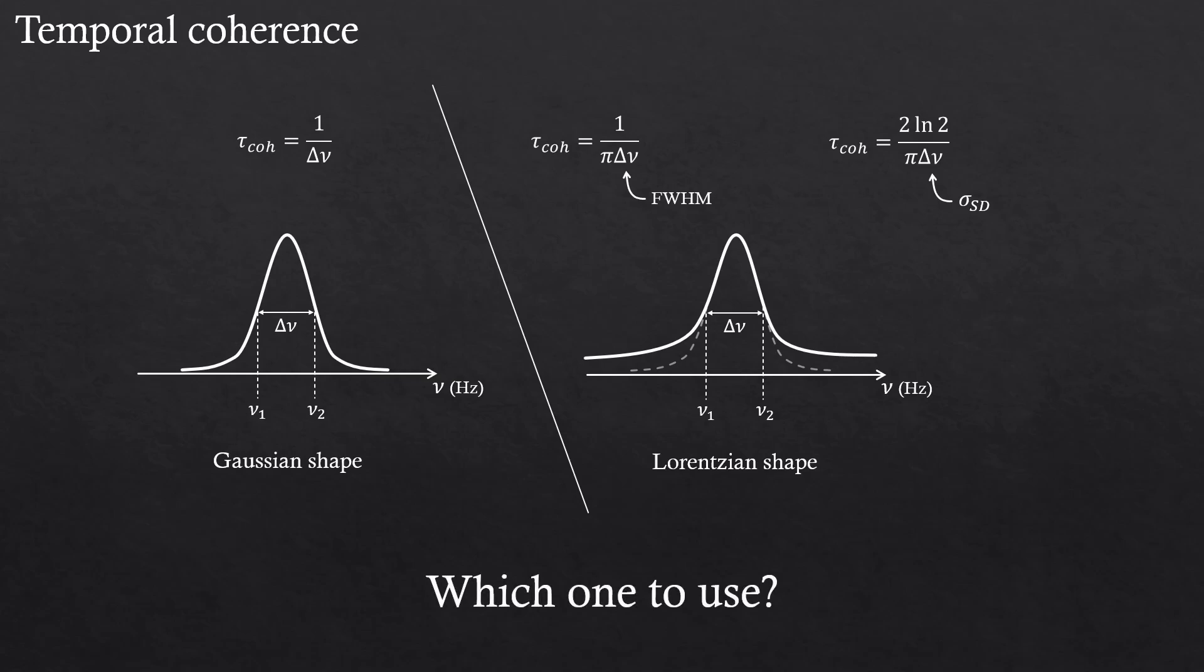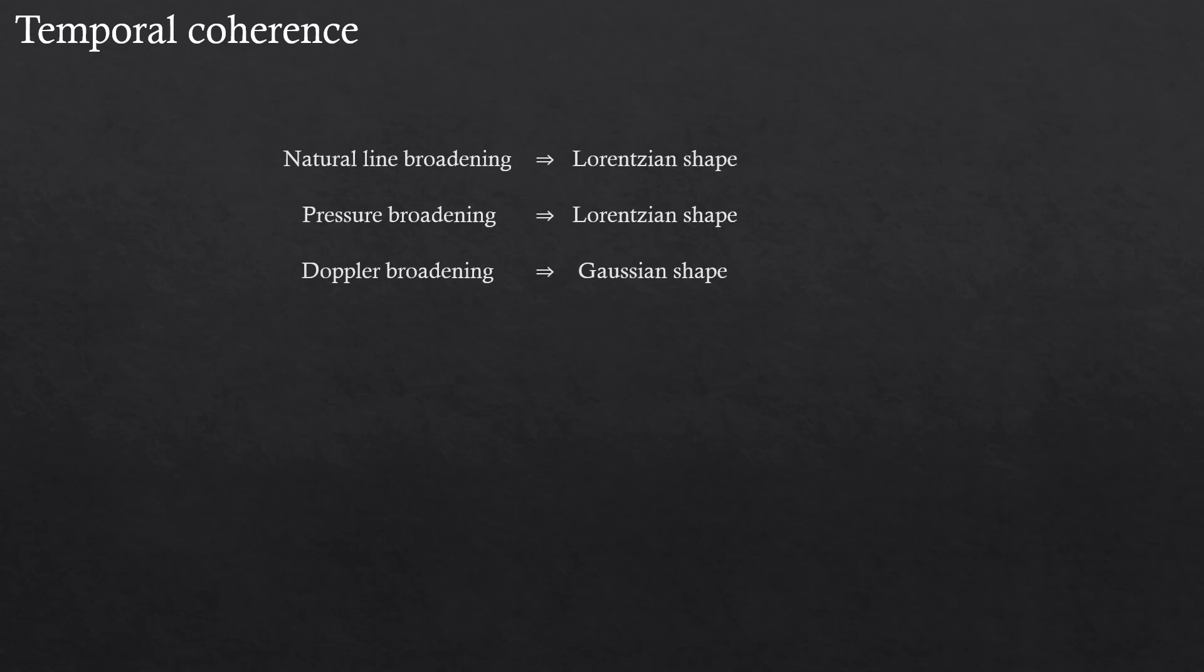So how do we decide which one to use? If the waves that you're investigating are known to experience natural line broadening, you would typically apply a Lorentzian shape. As the Lorentzian function describes the natural damping of oscillations. If you expect that they experience pressure broadening, you would also apply a Lorentzian. And if you're expecting Doppler broadening, you apply a Gaussian shape. The thing is, most spectral lines experience multiple types of broadening, right? So people often use the Voigt shape, which is a mixture of Gaussian and Lorentzian.